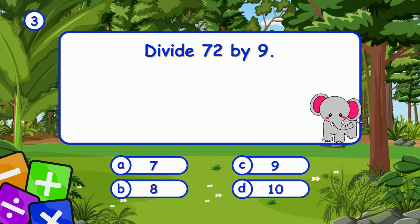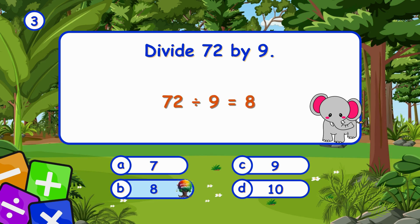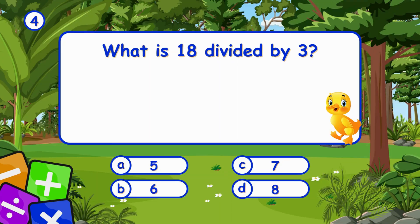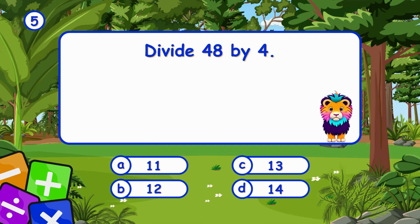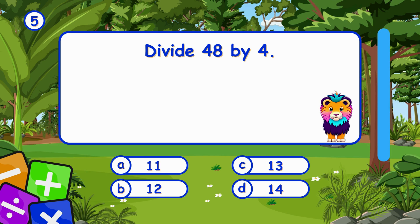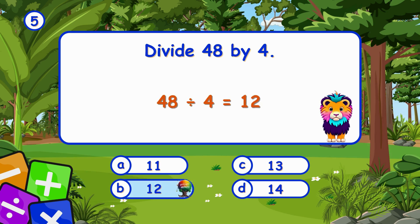Divide 72 by 9. It's B, 8. 72 divided by 9 equals 8. What is 18 divided by 3? It's B, 6. 18 divided by 3 equals 6. Divide 48 by 4. It's B, 12. 48 divided by 4 equals 12.